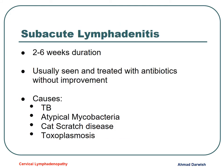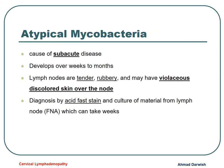For subacute lymphadenitis — two to six weeks duration — we see this when a lymph node is treated with antibiotics without response. It usually occurs in TB, cat scratch fever, toxoplasma, and atypical mycobacteria. Atypical mycobacteria usually develop over weeks to months; they are tender and rubbery, and have what we call violaceous discoloration of the skin above the lymph node. Diagnosis is mainly by fine needle aspiration, acid-fast stain, and culture.